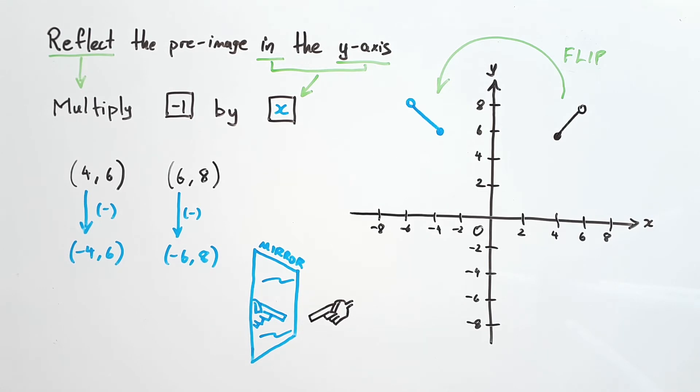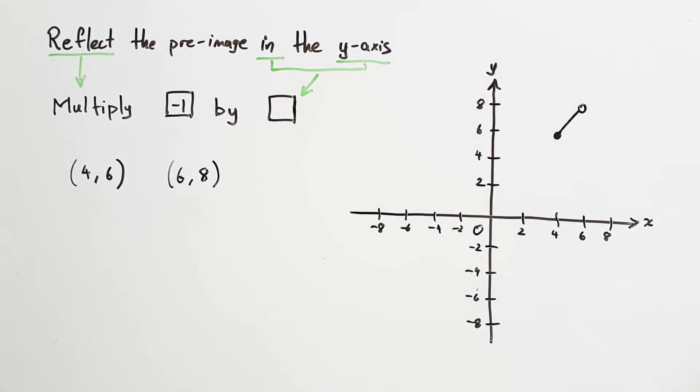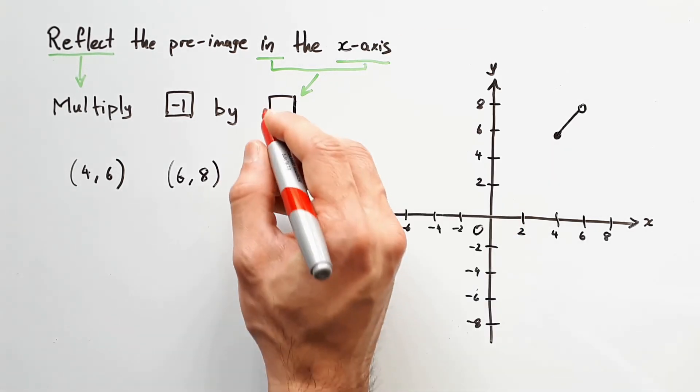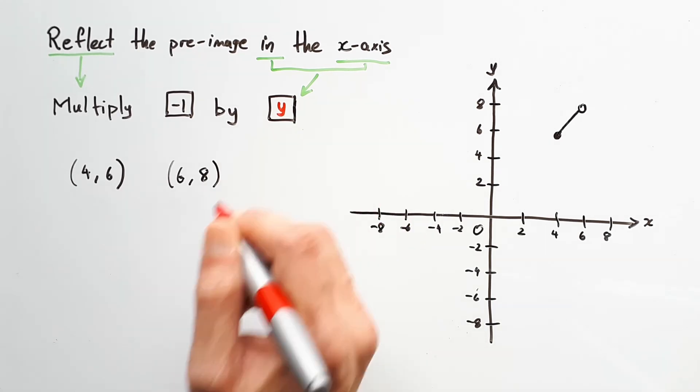There is also the matter of the other axis. So let's take a look at that now. Say we're asked to reflect the pre-image in the x-axis. Naturally, this will mean we're multiplying the y-values by negative 1.